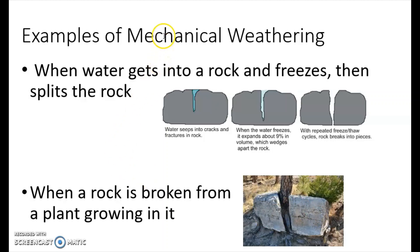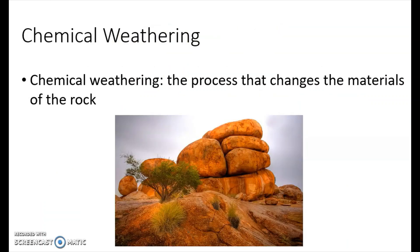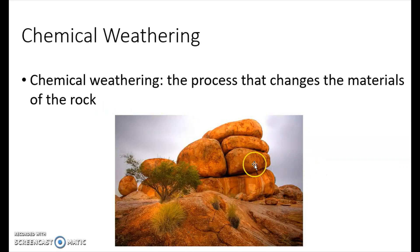That is mechanical weathering — it changes the size and shape of the rock. Now we're going to look at chemical weathering. Chemical weathering is the process that changes the materials of the rock. Whatever materials they were, they kind of get changed, like a chemical reaction. Look at all the different colors here — usually chemical weathering causes the color of the rock to change.